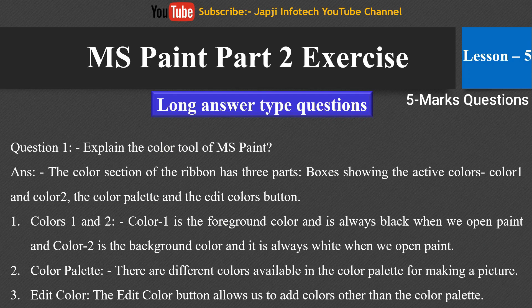Now we will move to long answer type questions. The first question is: explain the color tool of MS Paint. The color section of the ribbon has three parts: boxes showing the active colors — Color 1 and Color 2 — the color palette, and the edit color button. Color 1 is the foreground color and is always black when we open Paint. Color 2 is the background color and is always white when we open Paint. There are different colors available in the color palette for making a picture. The edit color button allows us to add colors other than those in the color palette.